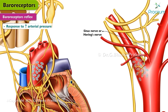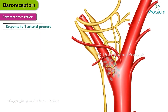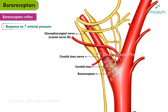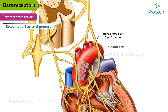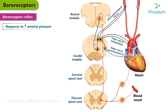Next, we'll learn about the baroreceptor reflex's response to increased arterial pressure. The sinus nerve, or Hering's nerve, from the carotid sinus, and the aortic nerve from the aortic arch, are together called the sino-aortic nerves, also referred to as the buffer nerves. Information from the carotid sinus baroreceptors is carried to the brainstem on the carotid sinus nerve, which joins the glossopharyngeal nerve or cranial nerve 9, and travels to the nucleus tractus solitarius or NTS. Information from the aortic arch baroreceptors is carried on the vagus nerve or cranial nerve 10, also traveling to the NTS.